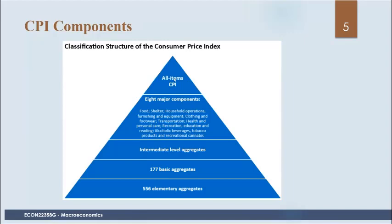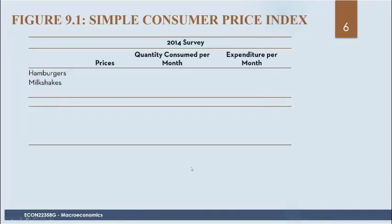Within each of those major components, there are even smaller indices — for example, one for cereal under food, or one for rental apartments under shelter. The all-items CPI is a weighted average of all of those. There are 566 elementary aggregates coming from the eight major categories. Let's look at a simple consumer price index example.